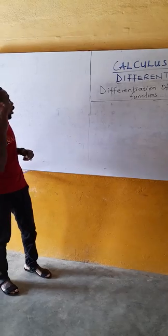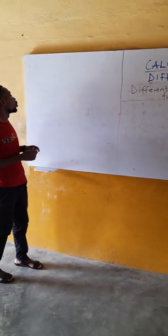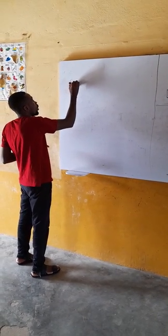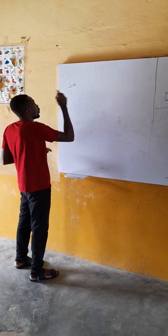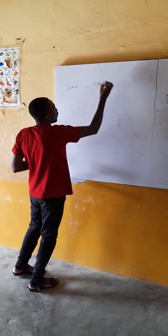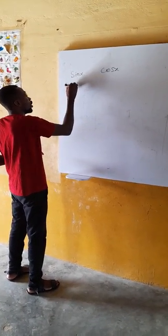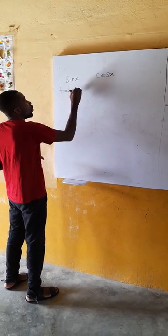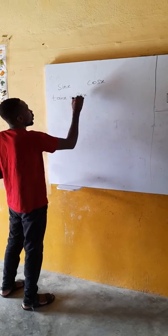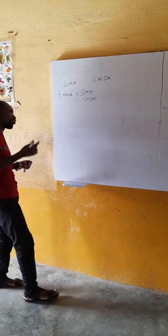Before we start, I would like to revise your knowledge on trig. Remember the basic trig identities we have: sin and cos. We can also express tan x as sin x over cos x — that is one important identity.